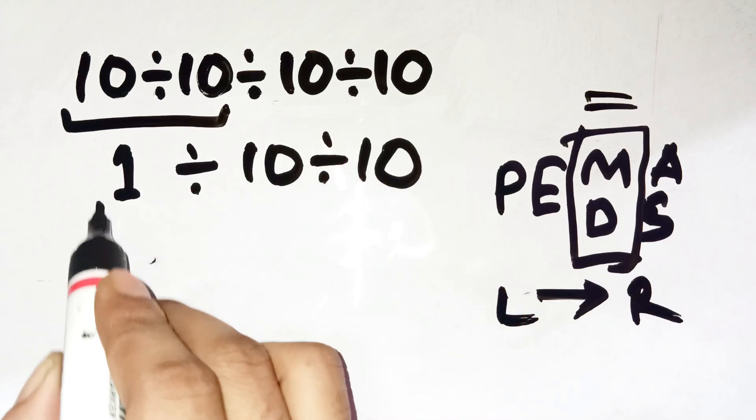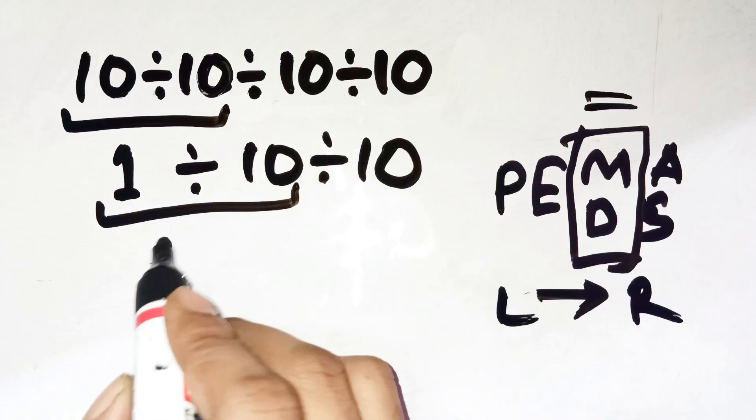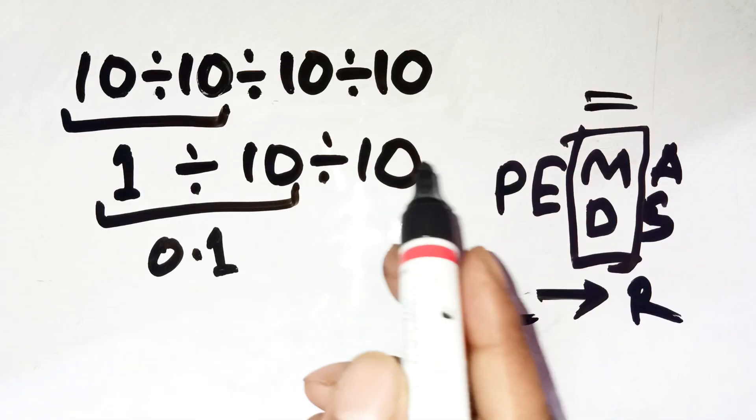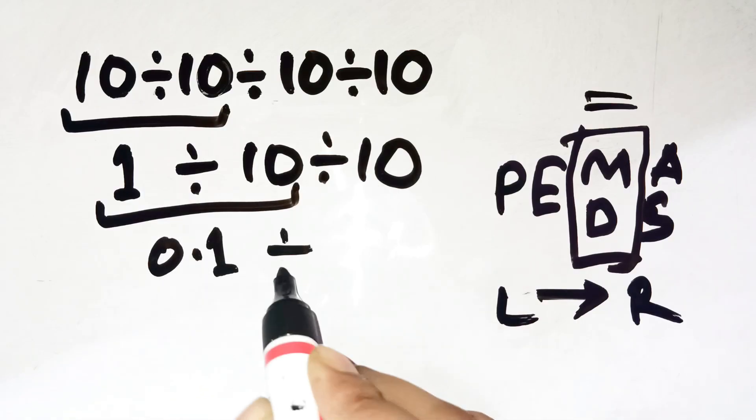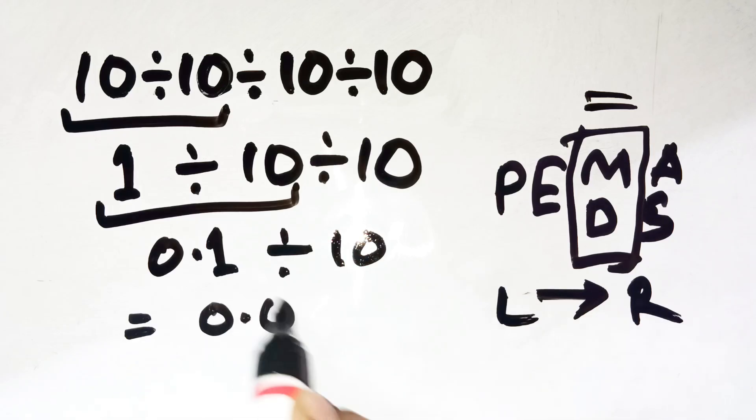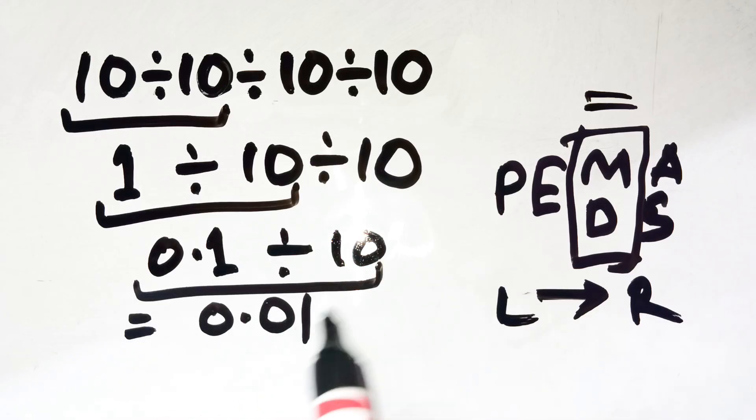Next, 1 divided by 10 equals 0.1. Now the last step, 0.1 divided by 10 equals 0.01. And that's it.